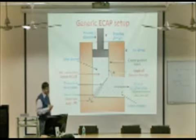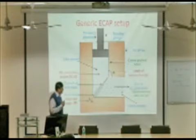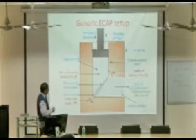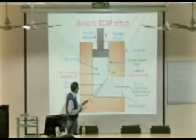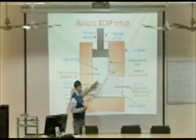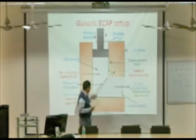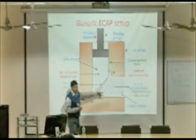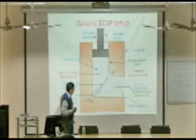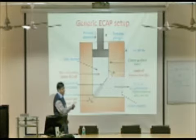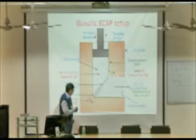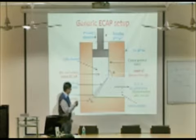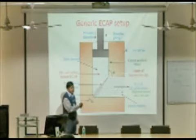Our work falls under ECAP — equal channel angular pressing. The main objective: this is one of the best SPD processes. The basic idea is to place a coarse grain material billet, press it through a channel. At the shear zone, due to a turning angle of 90 degrees or some other intersection angle, high strain is induced. When the strain is induced, it refines the microstructure. By inducing the strain, we can reduce the grain size. The beauty of this process is that the cross section of the billet remains the same, but we achieve higher strength.